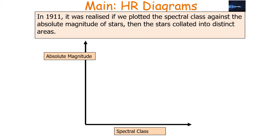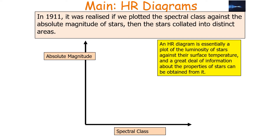Now in 1911 it was realised that if we plotted the spectral class against the absolute magnitude of stars, then the stars could collate into distinct areas. So a Hertzsprung-Russell diagram is essentially a plot of the luminosity of stars against their surface temperature, and a great deal of information about the properties of stars can be obtained from it.